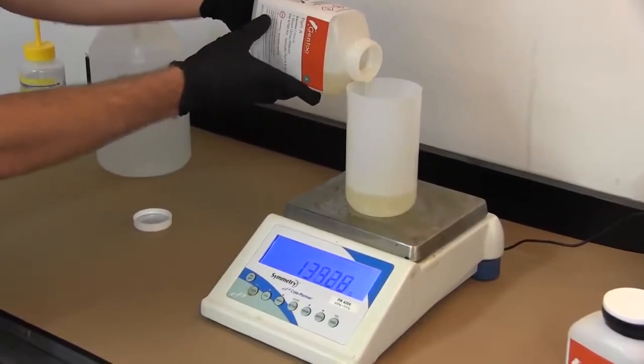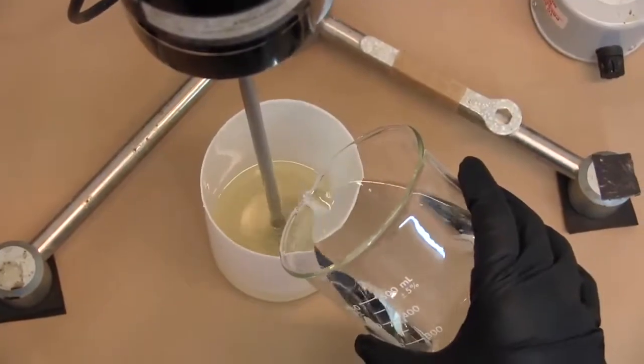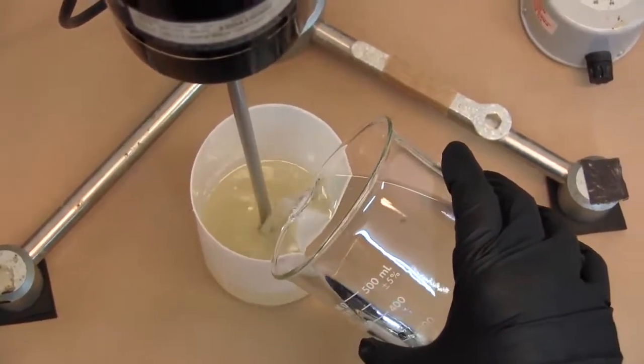Once complete, add Part A to the mixing vessel and turn on the mixer. Add Part B to Part A at a 1 to 1 ratio by weight.